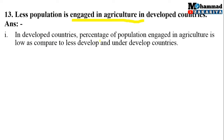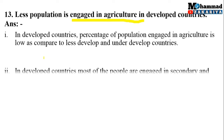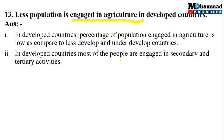Geographical reason number 13: Less population is engaged in agriculture in developed countries. Point number 1: In developed countries, percentage of population engaged in agriculture is low as compared to less developed and under-developed countries. Less developed और under-developed countries में agricultural activity में engaged लोगों की संख्या बहुत ज़्यादा होती है, लेकिन developed countries में बहुत कम।